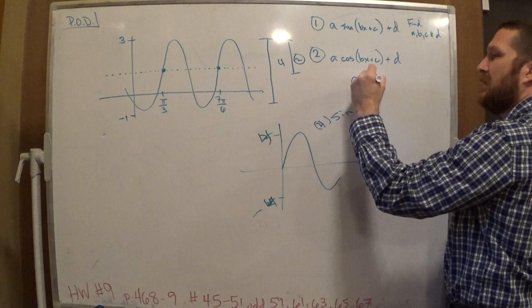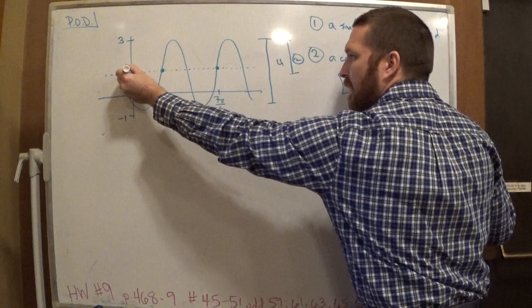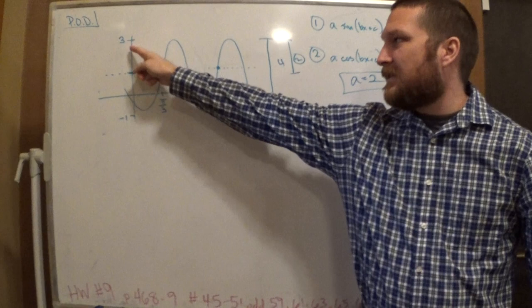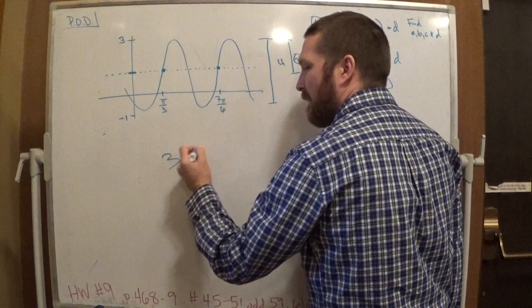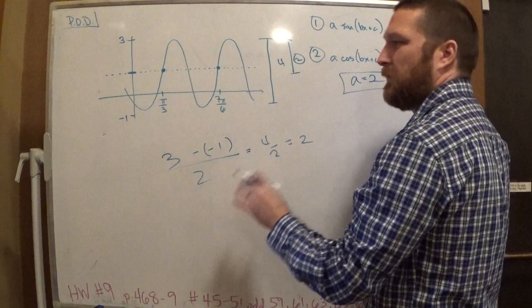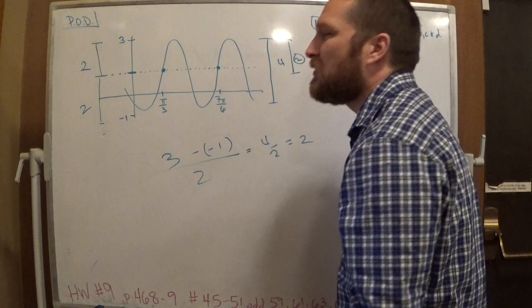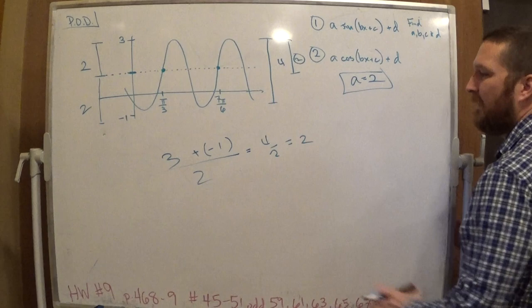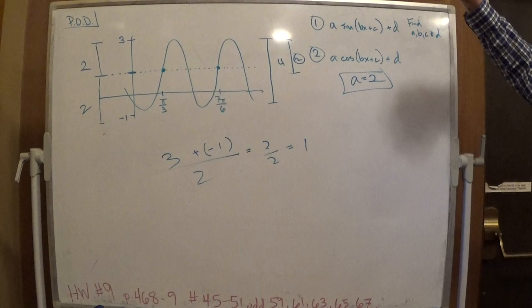Now that gives us D pretty easily. If A is equal to two, then what's this point right here? Two. So the distance from here to here needs to be two. It's not half of three — it's half of three minus negative one. Four over two, so it's two. This distance from here to here is two. Really what D is, is the average of these guys. The average of this would be two over two, which is one. The halfway point between any two numbers on a line is the average of those two numbers.